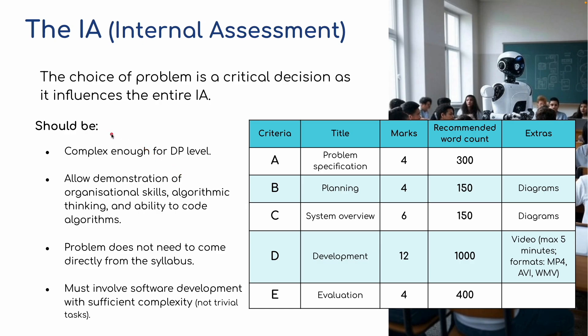The choice of problem is critical. For a standard level student this is 30% of your final marks, so you need to get it right. You need to decide on the problem for the internal assessment that you're going to be doing. I recommend looking on YouTube — I've put some of mine on YouTube — but it needs to be complex enough for DP level, allowing demonstration of organizational skills, planning, algorithmic thinking, and the ability to code algorithms. The problem does not need to come directly from the syllabus. Speak to your tutors about this — message me if you want, I can give you some ideas. It must involve software development with sufficient complexity, not a trivial task.